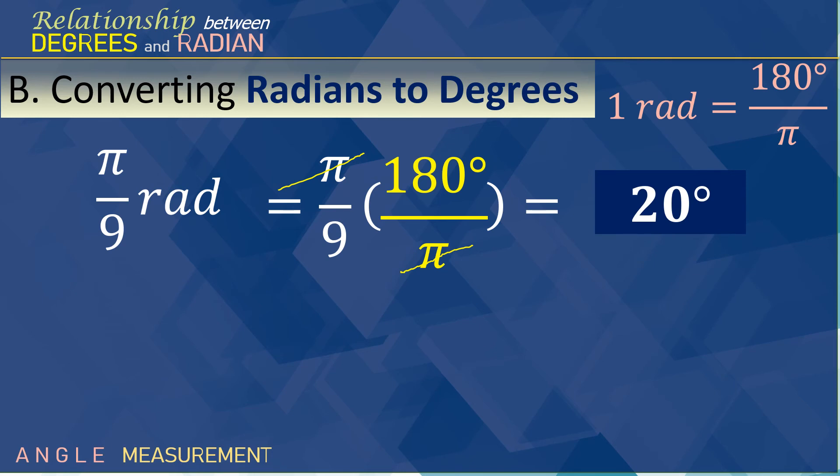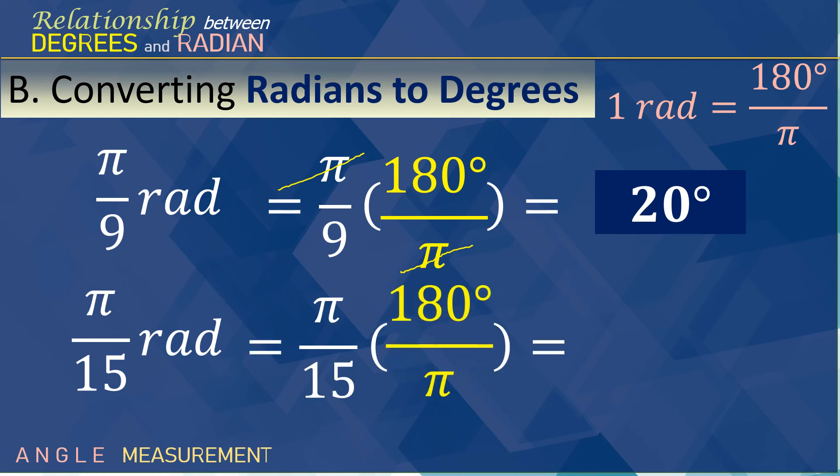Second, pi over 15 radians. We multiply pi over 15 radians. So, 180 degrees over pi. Cancel out pi here. We simplify. So, we have 12 degrees. So, pi over 15 is actually equal to 12 degrees.